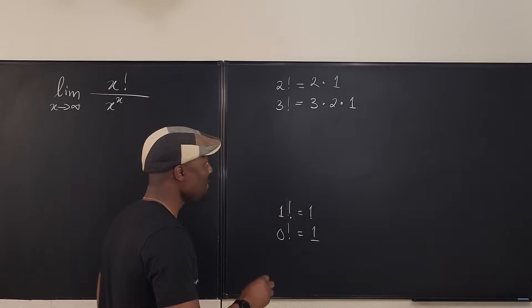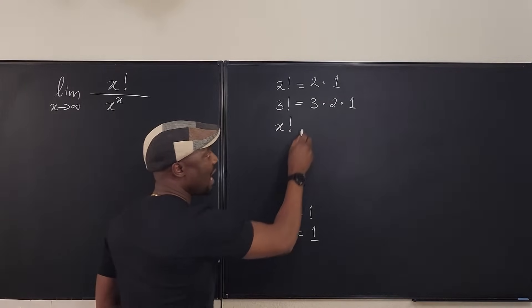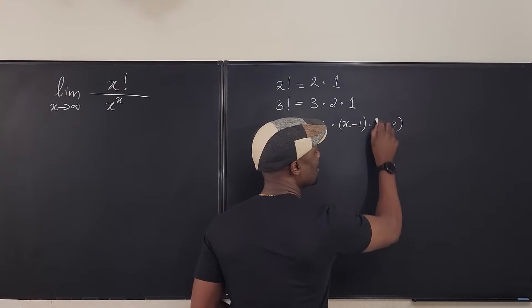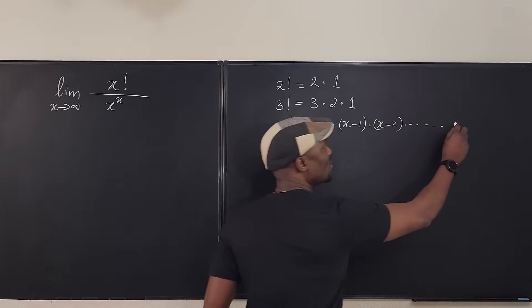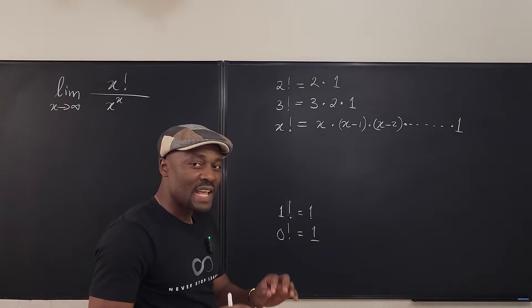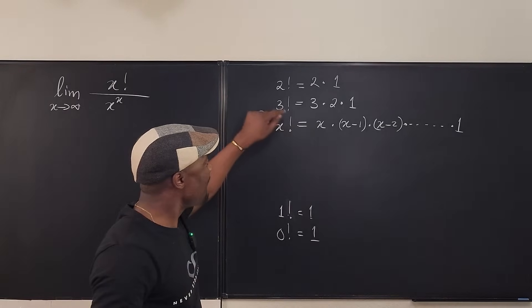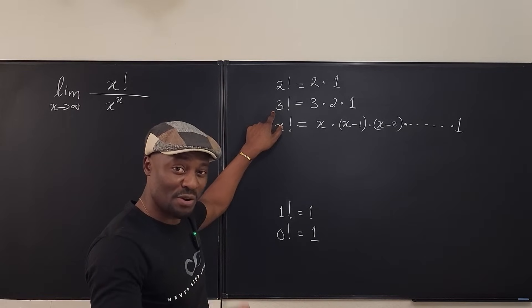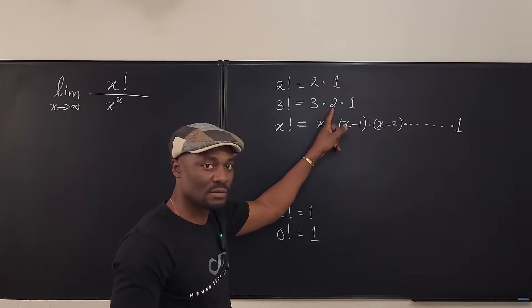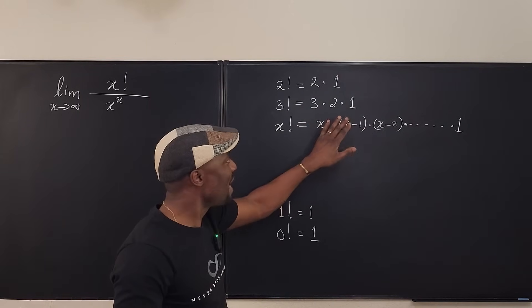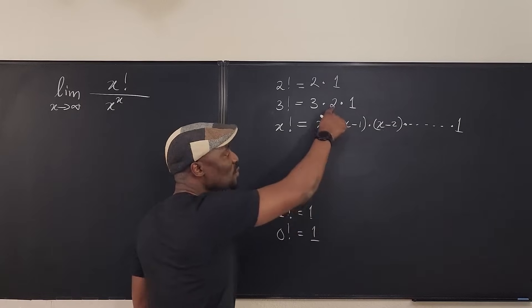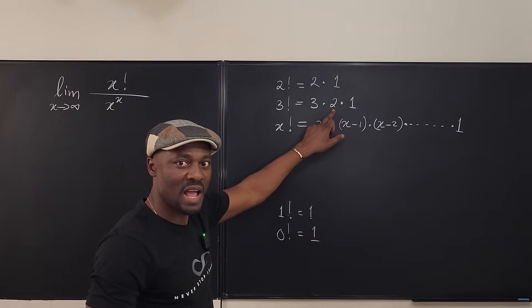If I write x factorial, what I'm saying is x multiplied by (x minus 1) multiplied by (x minus 2), and I keep multiplying until the last number I get is 1. Now it is important to see this: whenever you do a factorial, the number of terms that are really significant is 1 less than the actual number. For example, 3 factorial is 3 times 2 — the 1 doesn't change anything. What if I refuse to subtract 1 from each term and just keep it as 3 times 3?